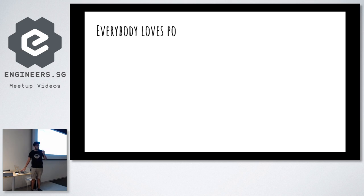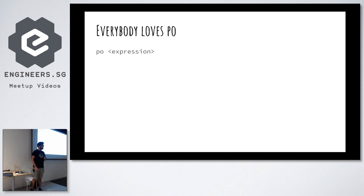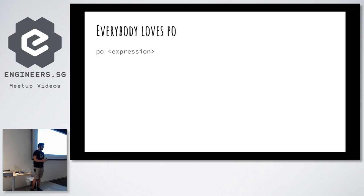Everyone loves PO. So what does PO do actually? PO — if you use it, you pass in an expression, it'll evaluate the expression in your debugger, and that's it. That's why we normally use this as a kind of print statement in our debugger.